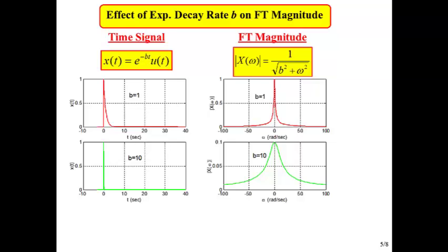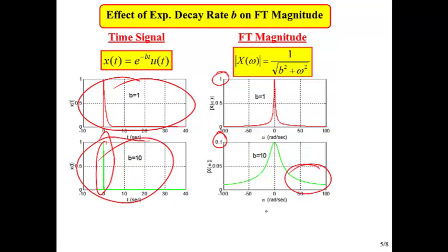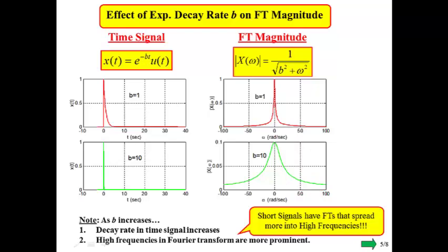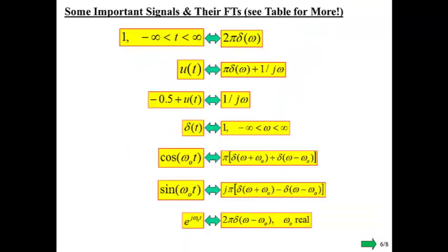Let's take a look at what happens as b changes. When b is equal to 1 we get a decay like this versus b equal to 10, decay is much faster. It's so fast it's hard to actually see. But notice what happens. First of all, the scale changes. But more importantly, we get more relative content at high frequencies for something really short in the time domain. That's a fundamental result, a big idea that short signals tend to have Fourier transforms that spread farther into the high frequencies.